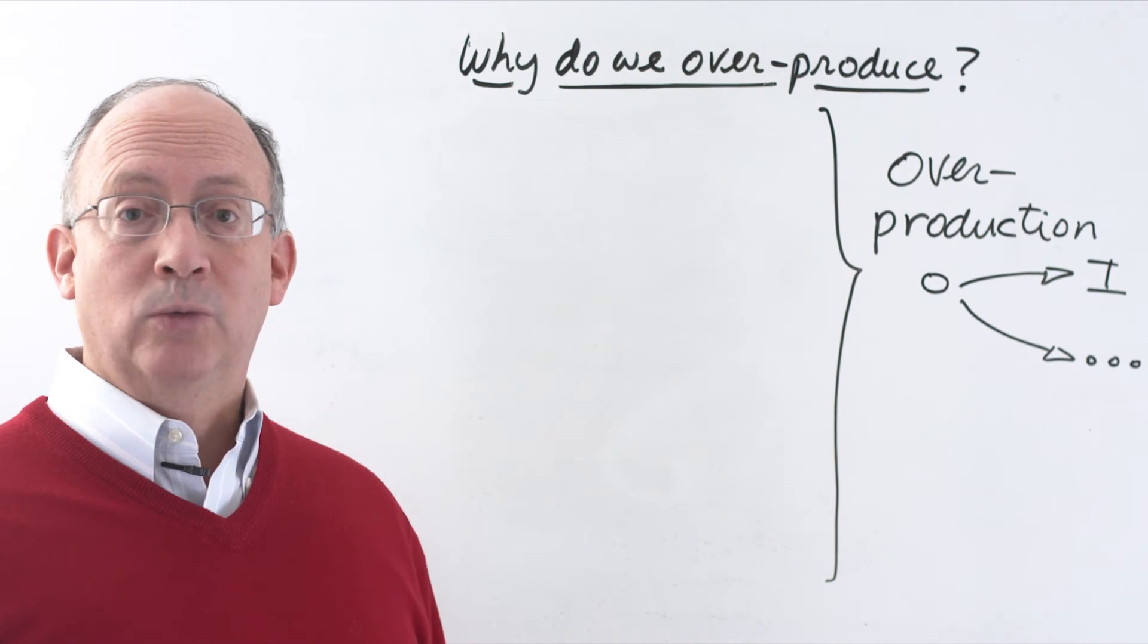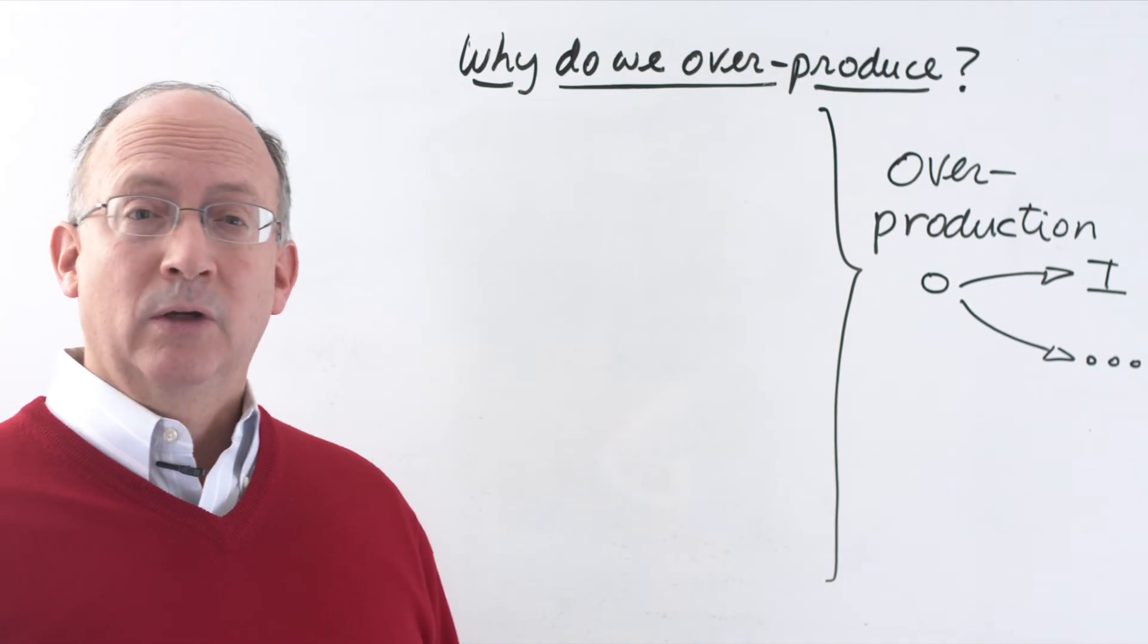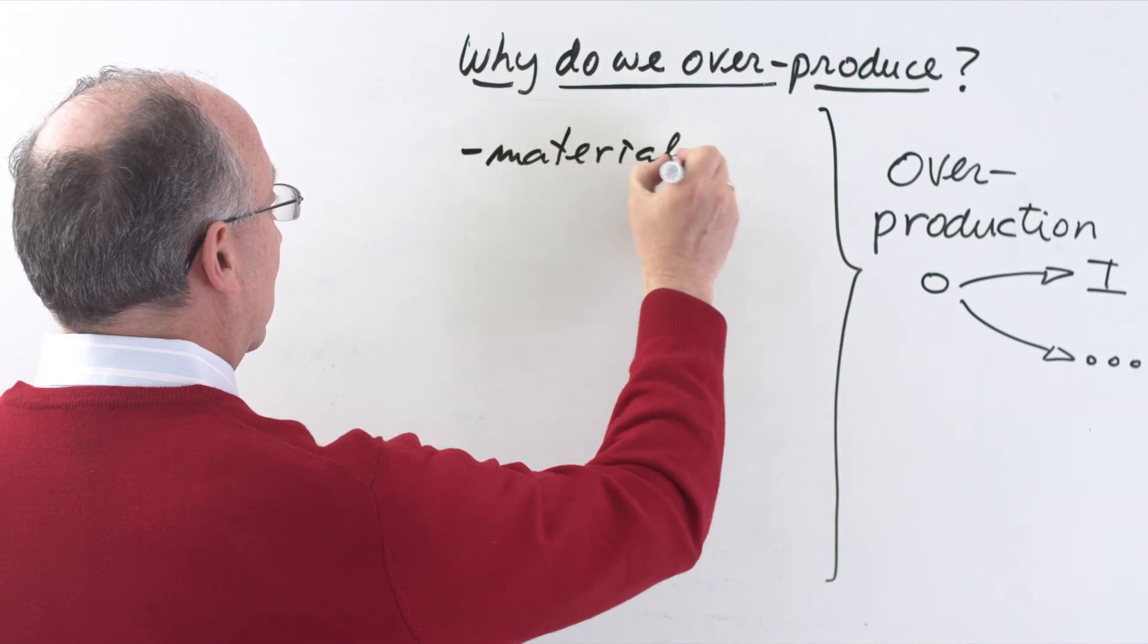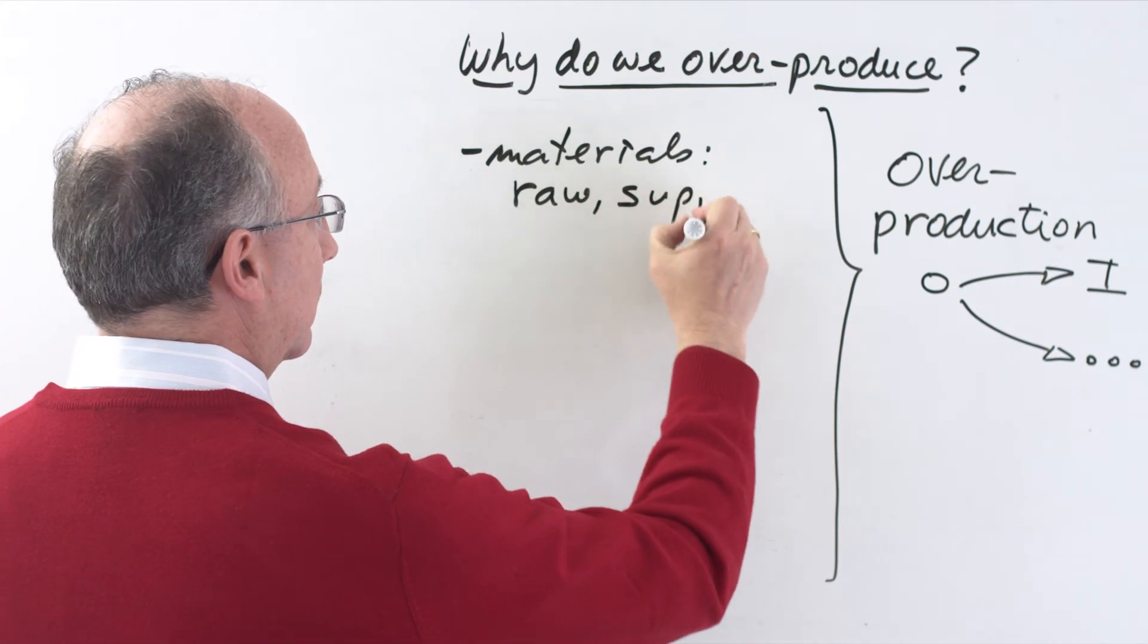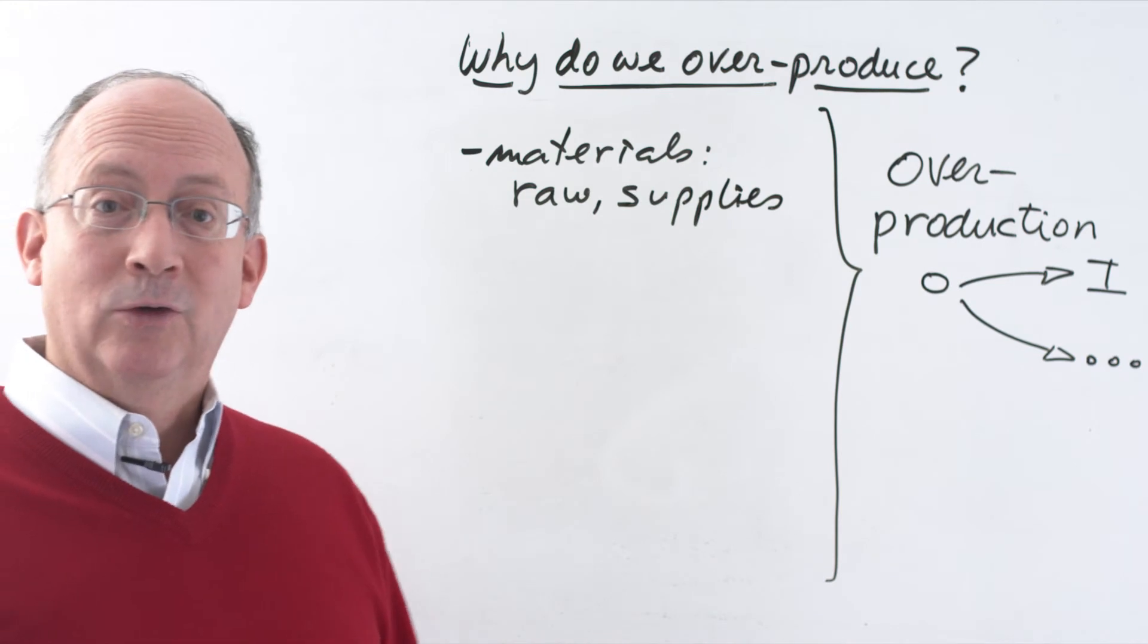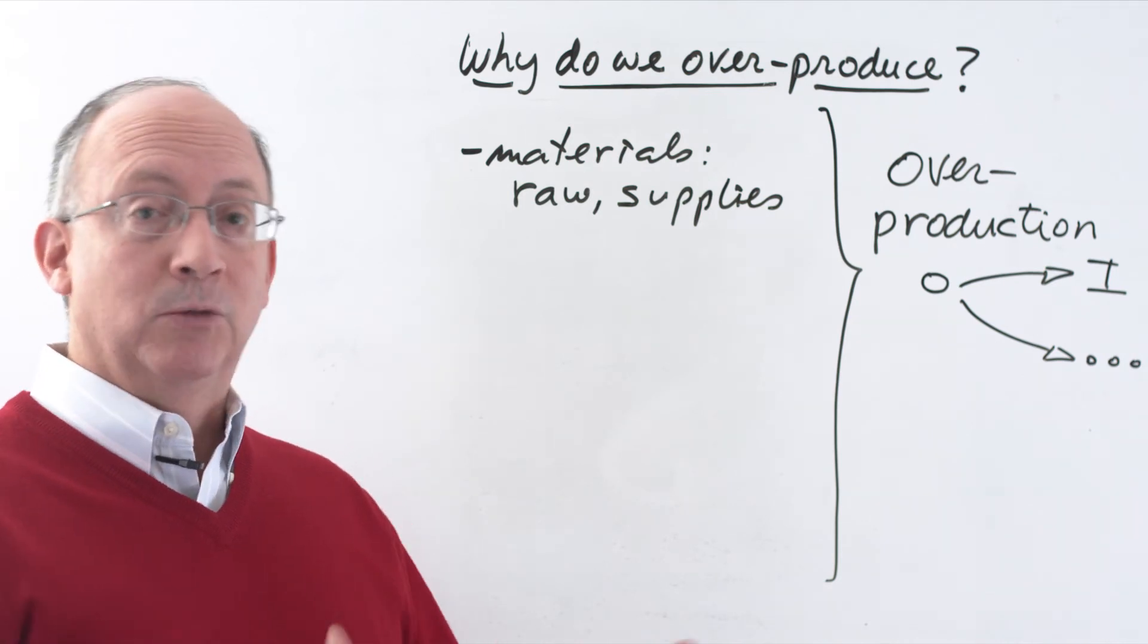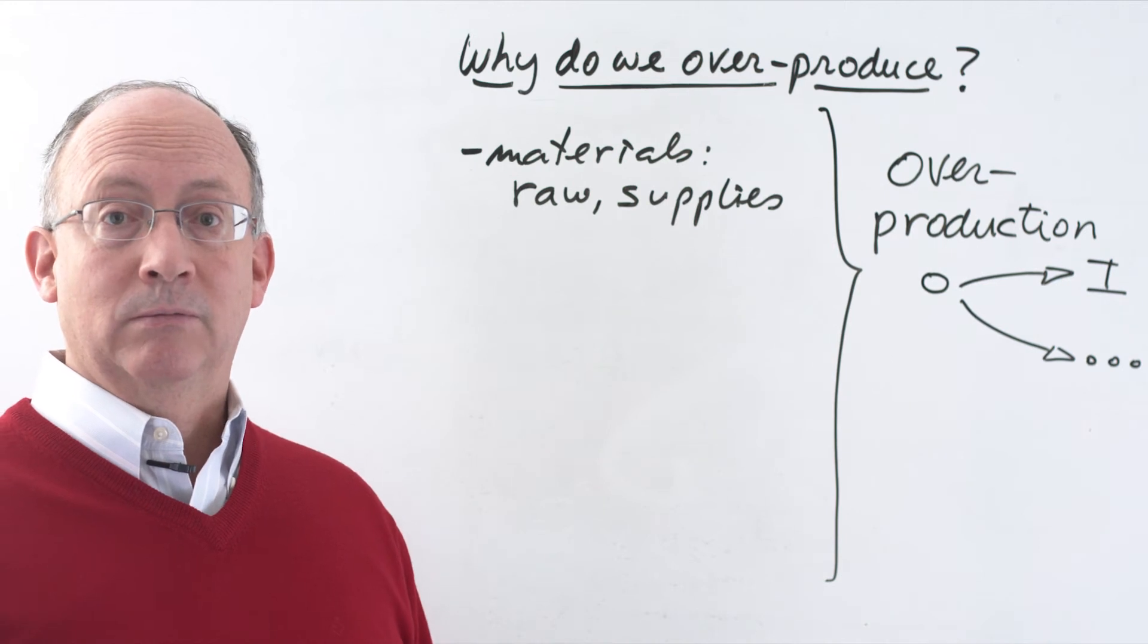Overproduction may also be due when smaller factors take on larger importance than they should. For instance, what happens when you have materials - raw materials or supplies - and they just happen to be available now? When you have them available right now, it may create an urgency to do something with them, such as putting them into production and creating more work in process inventories.